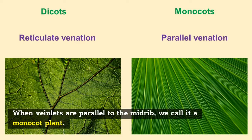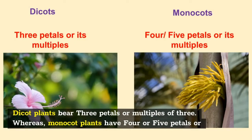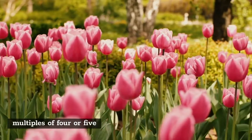When veinlets are parallel to the midrib, we call it a monocot plant. Dicot plants bear three petals or multiples of three, whereas monocot plants have four or five petals or multiples of four or five.